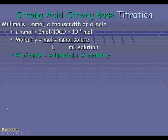A millimole is a thousandth of a mole. Molarity is equal to moles over liters, but here is another way to calculate it that we will be using a lot: millimoles of solute over milliliters of solution. This gets rid of having to convert liters into milliliters back and forth. The calculation in green — the number of millimoles is equal to the volume in milliliters times the molarity — is going to be really useful as we go through our titration problems.